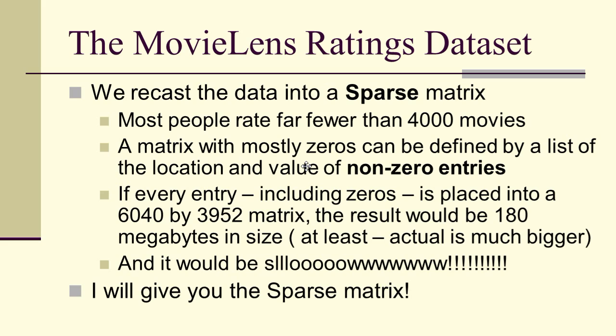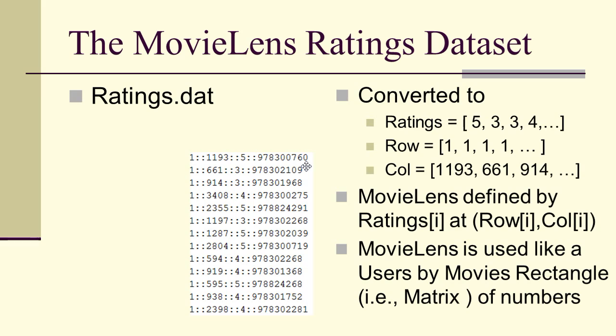We're going to recast the data into a sparse matrix. The key here is that most people rate far fewer than four thousand movies. If we think of the movie ratings data as a matrix where columns are movies and rows are users, we'd have a huge matrix but most of it would be zeros — about 180 megabytes in size — which is enormous, especially when making temporary copies for multiplications. So we'll work with what's called a sparse matrix.